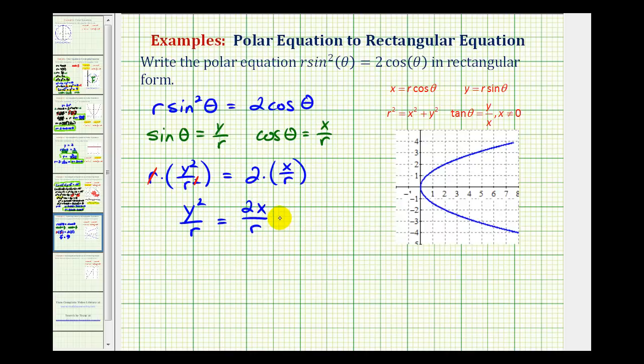And now if we multiply both sides of the equation by r, this simplifies to one and this simplifies to one, leaving us with our rectangular equation, y squared is equal to two x.